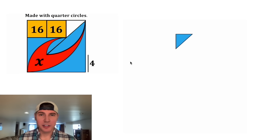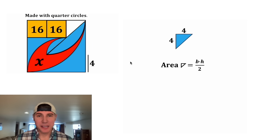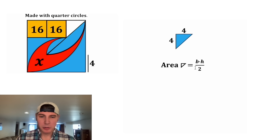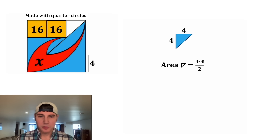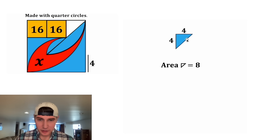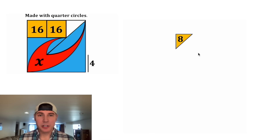Next let's look at this triangle. Both of these sides are equal to 4, and the area of a triangle is base times height divided by 2. We can plug in 4 for the base and 4 for the height. 4 times 4 is 16, divided by 2 is 8. So the area of this triangle is equal to 8. Let's make it orange and put it back.